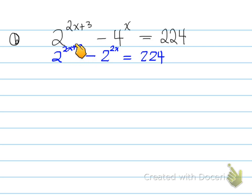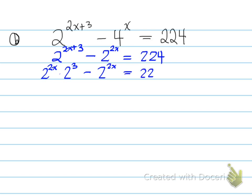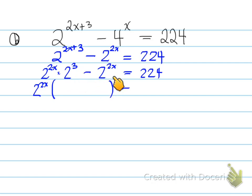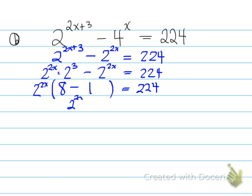Note that we have a sum in an exponent, and a sum of exponents results from a product of powers. So 2 to the (2x+3) becomes 2^(2x) times 2^3, minus 2^(2x) equals 224. We have 2^(2x) appearing twice, so we common factor it out, leaving (2^3 minus 1), which is 8 minus 1 equals 7. So 2^(2x) times 7 equals 224.